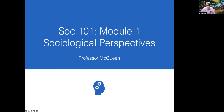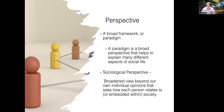Today we're covering the sociological perspective. First off, what is a perspective? The word paradigm always seems a little confusing — a paradigm essentially means looking at things from a broader framework, a different perspective, a different view. In sociology, we use what is called the sociological imagination to understand how to view things in the social construction of reality. A paradigm is a broad perspective that helps explain many different aspects of social life, broadening our view to understand why the world works the way it does and why these constructions of reality intersect with our day-to-day life.